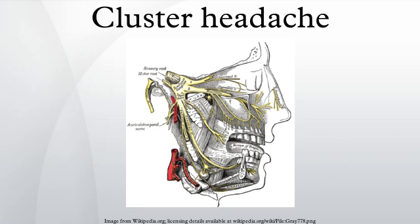The typical symptoms of cluster headache are grouping of recurring headache attacks of severe or very severe unilateral orbital, supraorbital, and/or temporal pain. If left untreated, attack frequency will range from one attack every two days to eight attacks a day. The headache attack is accompanied by at least one of the following autonomic symptoms: drooping eyelid, pupil constriction, redness of the conjunctiva, tearing, runny nose, and less commonly, facial blushing, swelling, or sweating, commonly but not always appearing on the same side of the head as the pain.